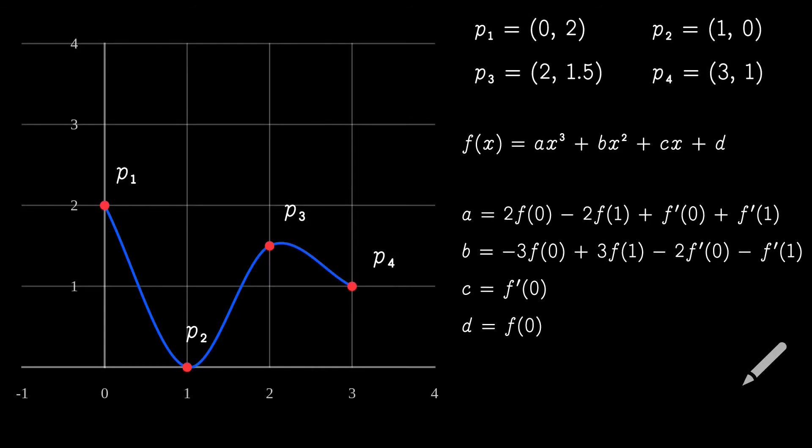Now what we will do is build the spline piecewise using this third degree function. For example, let's focus on the second chunk between P2 and P3. F of 0 and F of 1 are the starting and ending points of the interval, in this case P2 and P3 respectively.